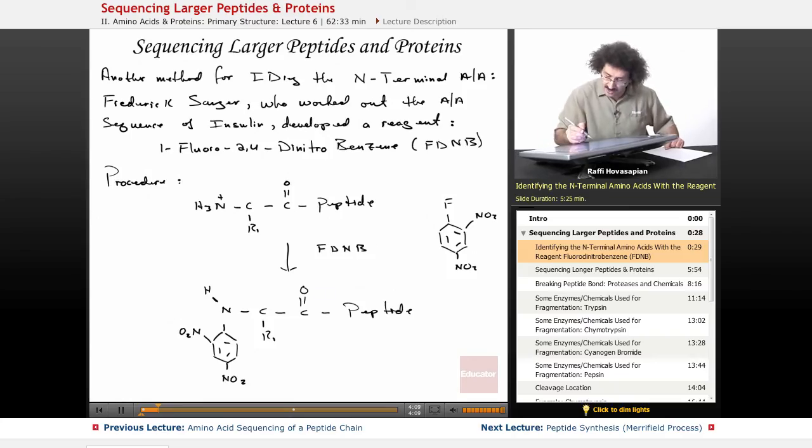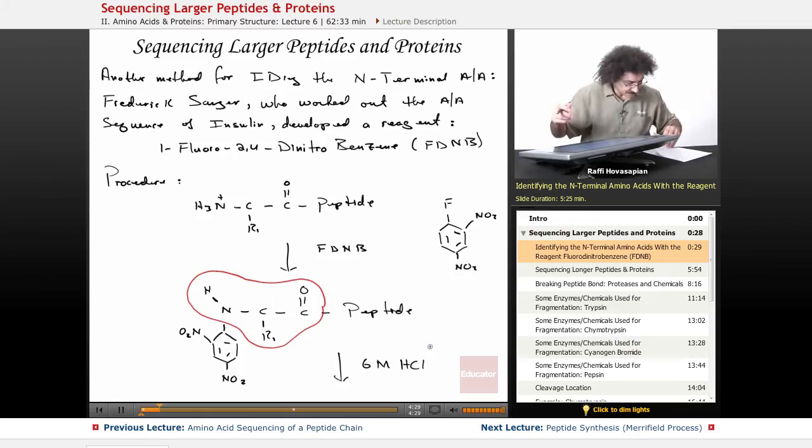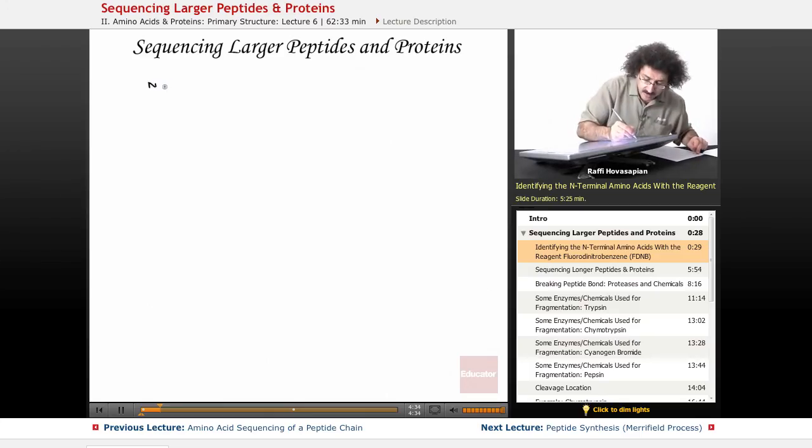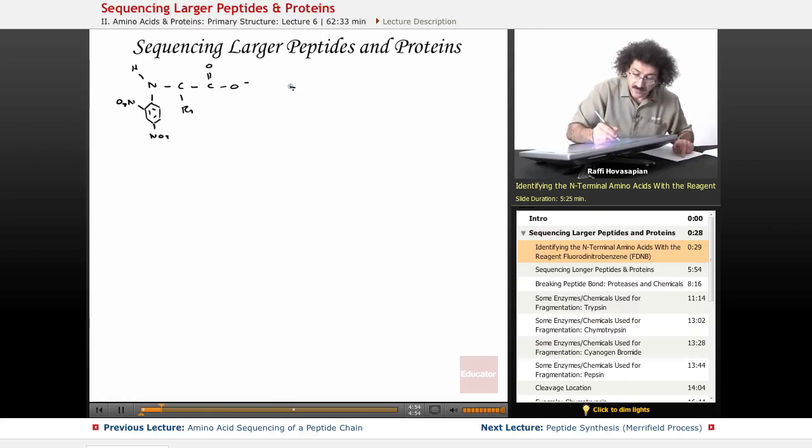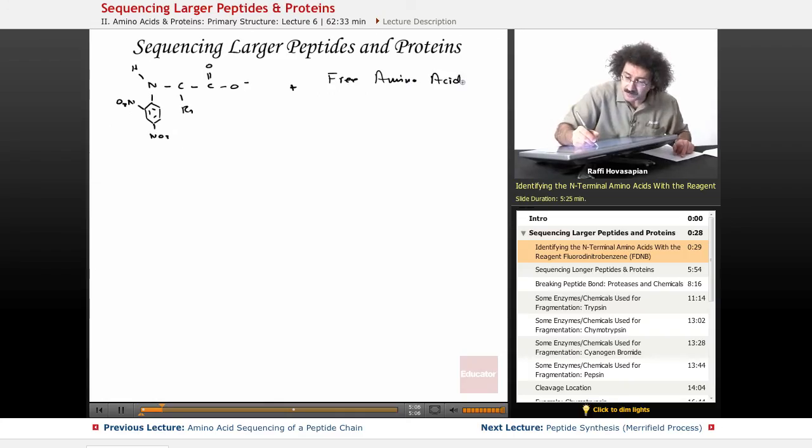Basically, you're just replacing this fluorine with the N-terminal amino acid. It just acts as a label. Once you've labeled this, then what you do is react this with 6-molar HCl to hydrolyze, to completely break apart every single bond, to free up every amino acid. What you end up with is the labeled terminal amino acid - you have the R1, you have H, and your label with NO2 groups, plus free amino acids. When you use strong acid like that, 6-molar HCl, you completely hydrolyze the protein into all of its free amino acids.